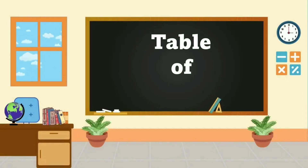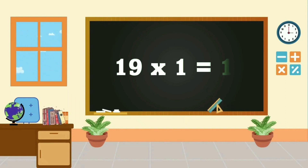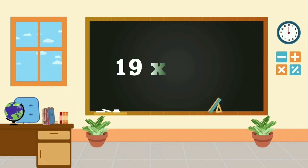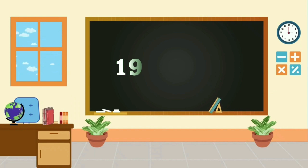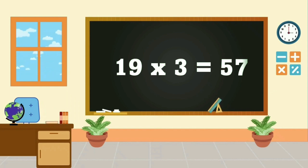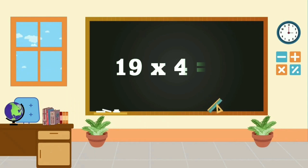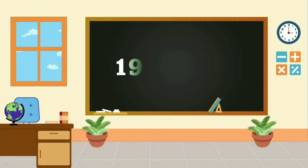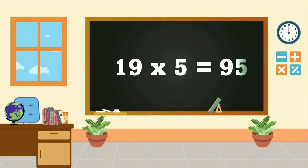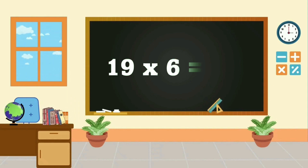Table of 19. 19, 1's are 19. 19, 2's are 38. 19, 3's are 57. 19, 4's are 76. 19, 5's are 95. 19, 6's are 14.